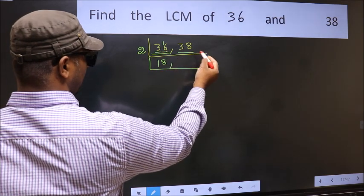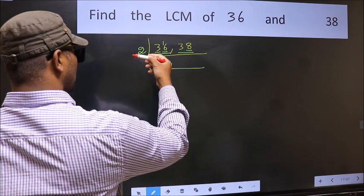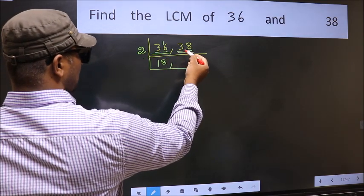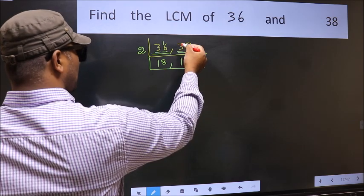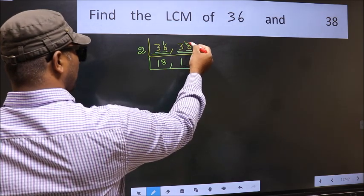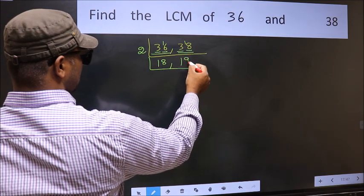The other number 38, last digit 8, even, so this is divisible by 2. First number 3, a number close to 3 in 2 table is 2, so 1, 2. 3 minus 2, 1, 1 carried forward 18. When do we get 18 in 2 table? 2, 9, 18.